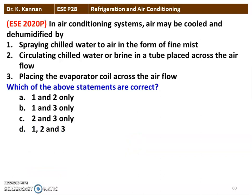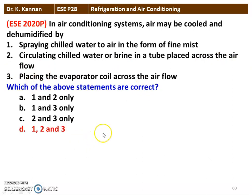Next question from the 2020 question paper. In an air conditioning system, air may be cooled and dehumidified by: spraying chilled water into air in the form of fine mist; circulating chilled water or brine in tubes placed across the air flow; or placing the evaporator coil across the air flow. All three statements are correct for the dehumidification of an air conditioning system.